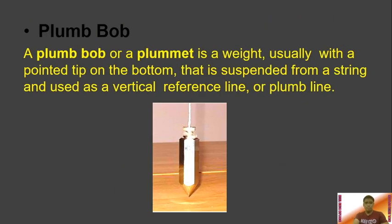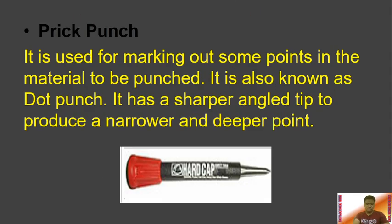Then we have the plumb bob, or plummet — a weight usually with a pointed tip on the bottom, suspended from a string, used as a vertical reference line or plumb line. If we want to make our installations vertical and straight with respect to the floor, we use a plumb bob. Then we have the center punch, used for marking points in the material to be drilled. It has a sharper angled tip to produce narrower and deeper points, and is used to put an initial dot on concrete so the drill bit won't move around, allowing a precise hole to be made.